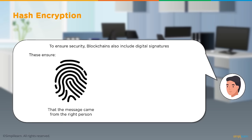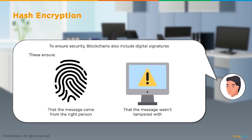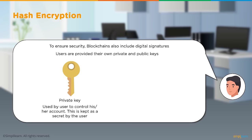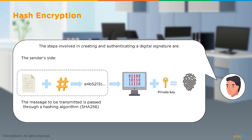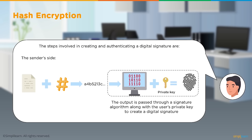To ensure security, blockchain also includes digital signatures — ensuring the message comes from the right person and has not been tampered with. Users are provided a private and public key pair when onboarding. The private key controls the user's account and is kept secret — like a password. The public key identifies the user on the network and is shared along with transactions for others to verify. At the sender side, the message is passed through SHA-256 and combined with the private key to generate a digital signature.